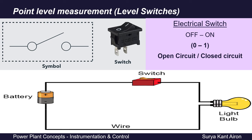A point level measurement is basically a level switch — a switch that acts on a fixed set point. This is similar to a basic electrical switch. The purpose of an electrical switch is to make or break the circuit depending upon its contact position, to turn on or off an electrical equipment, maybe a simple fan or a bulb in your home.